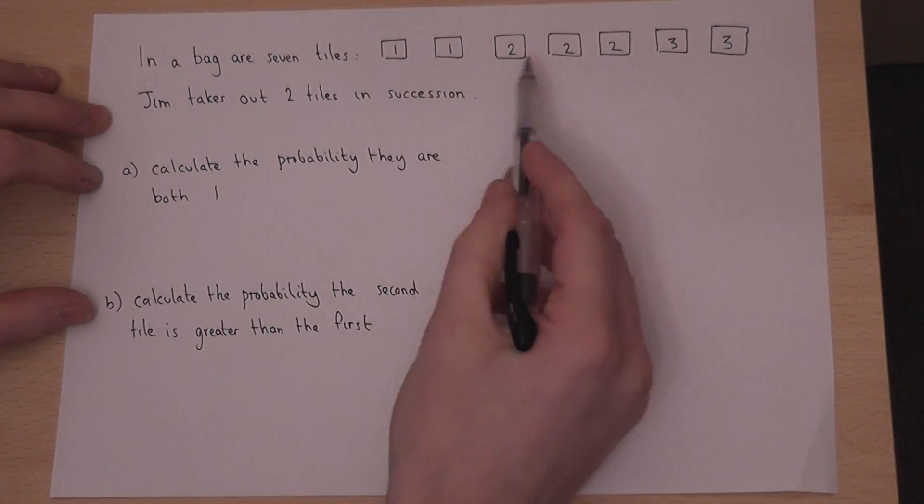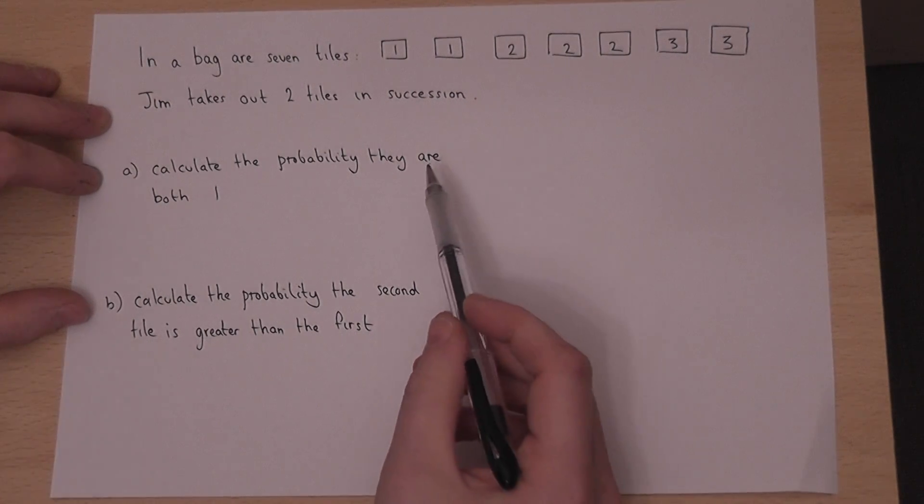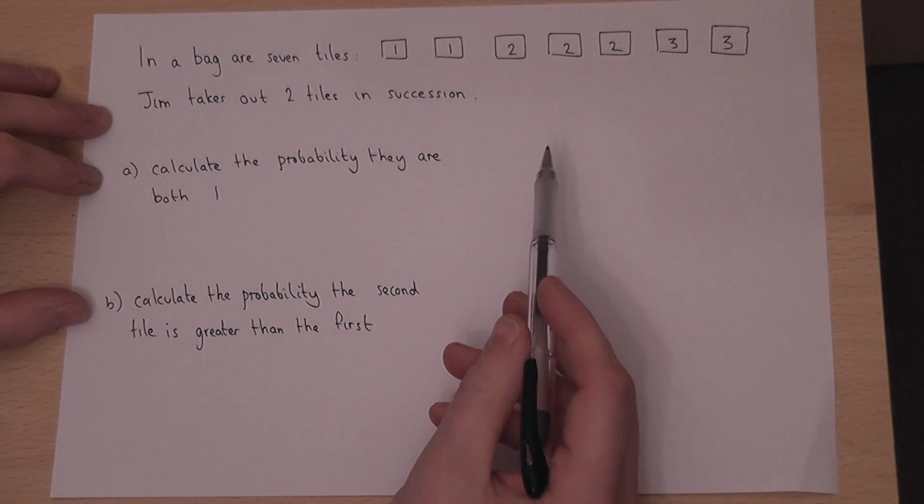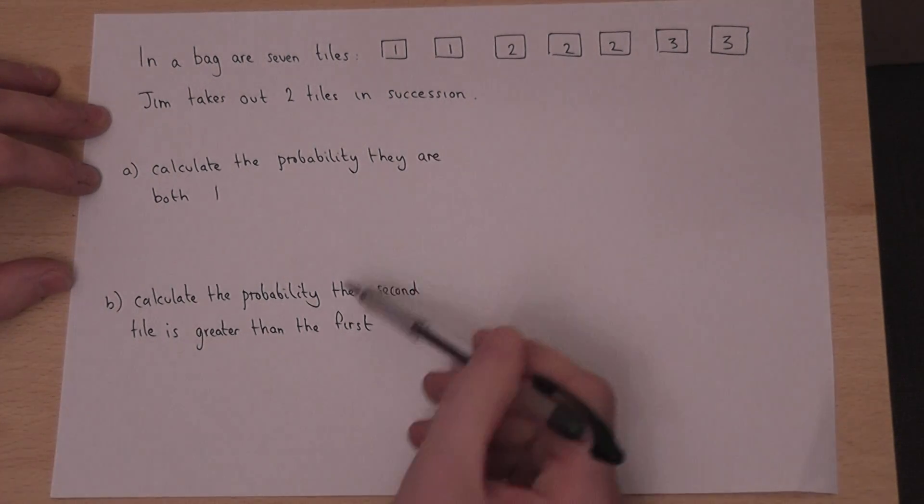In this question there are seven tiles in a bag. Jim pulls out one tile which is not then replaced, and he then pulls out a second tile. We're asked to solve two questions.